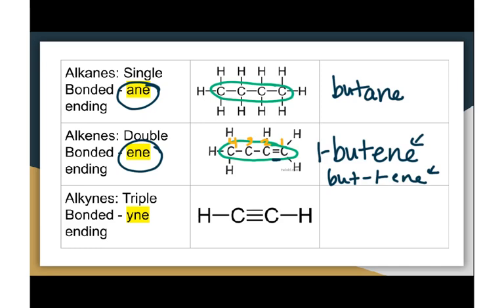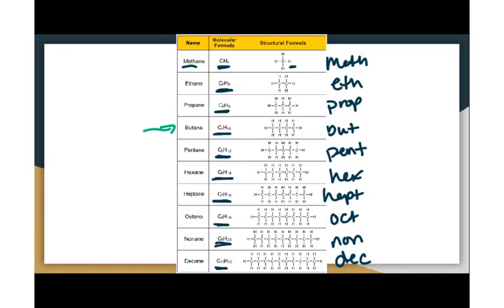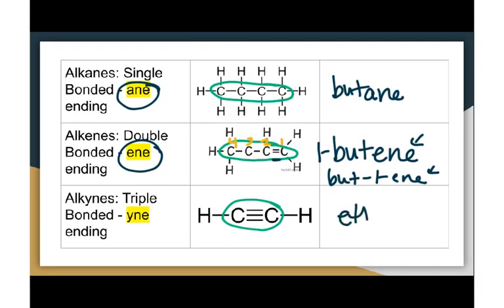The last one — I'm going to circle my longest carbon chain. This time I only have two carbons, so that's eth. And because I have a triple bond this time, it's -yne. Normally I would have to say which carbon it's on, but there's only two carbons. It's on the first carbon no matter which direction you start counting. So I don't need to write the number because it's on the same carbon no matter which way you go.